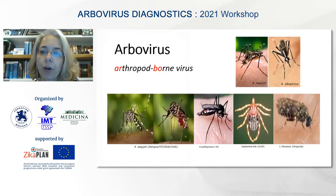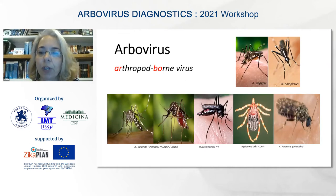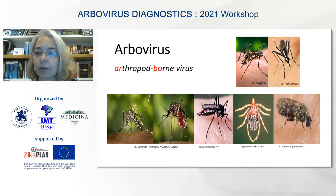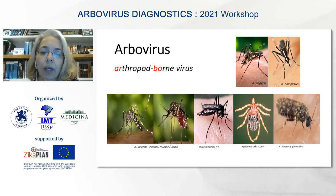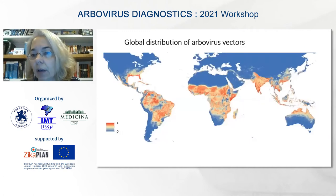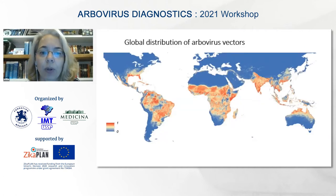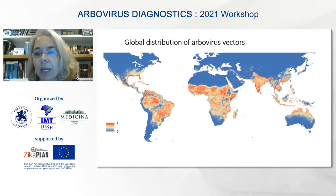First of all, arbovirus comes from the term arthropod-borne virus. Here we have some examples of arthropods that can transmit viruses, and they are more concentrated in tropical and semi-tropical regions in the world, which is directly related to the incidence of this disease.